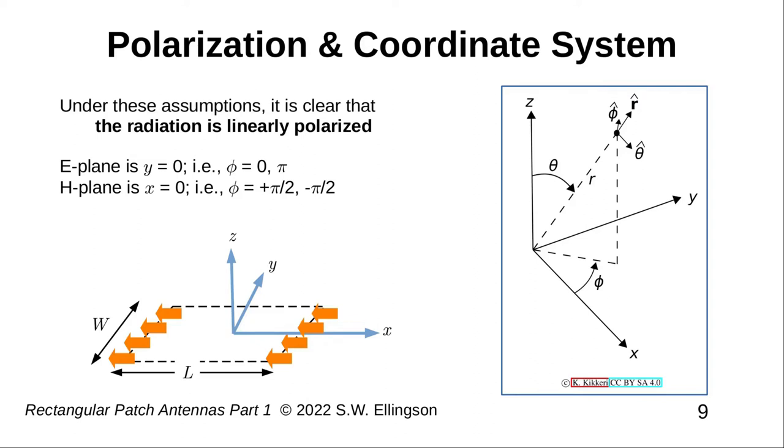Also, we are now just about ready to talk about pattern. For this, a global coordinate system is useful. Here, a global Cartesian coordinate system has been established, with X corresponding to the L, or length axis, Y corresponding to the W, or width axis, and Z perpendicular to the patch, which will be the primary direction of radiation. For reference, the inset on the right shows the definitions of the spherical coordinates theta and phi in this particular coordinate system.